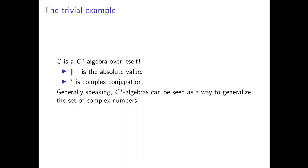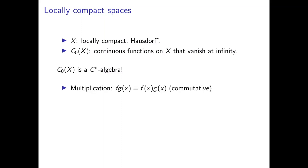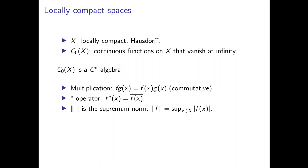The next important class of examples comes from locally compact spaces. Let X be a locally compact Hausdorff space and let C₀(X) denote the continuous functions on X that vanish at infinity. Then C₀(X) is a C-star algebra: multiplication is pointwise multiplication of functions, the star operator is pointwise complex conjugation, and the norm is the supremum norm — the supremum over all x of |f(x)|. This works because continuous functions vanishing at infinity are bounded.